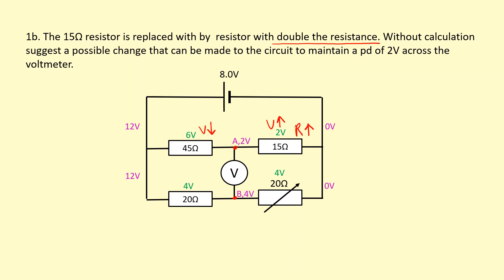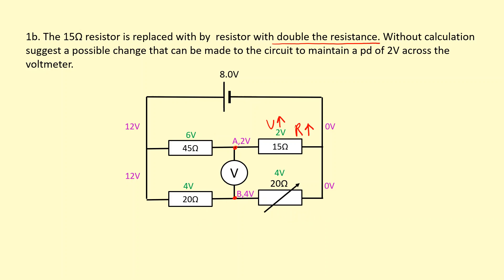One possible change is to increase the resistance of the variable resistor in the other branch, so the voltage across it also goes up and the voltage at point B goes down. We'd have to verify with calculation, but we can make the change such that the drop is still two volts between the two points. Another possible change is to double the resistance of the other resistor in that branch as well — if we double it, we restore the three-to-one ratio between those two resistors.